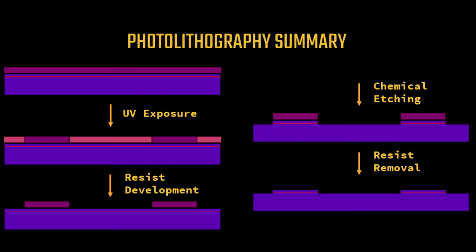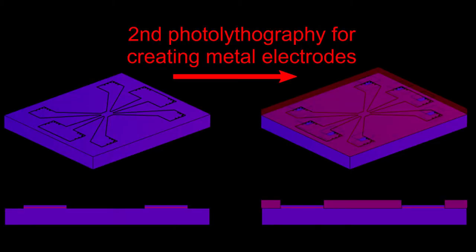In summary, we have used photolithography and etching to remove the quantum well from microscopically patterned regions of the chip. In the next step, we use photolithography again to add a metal pattern to the chip.